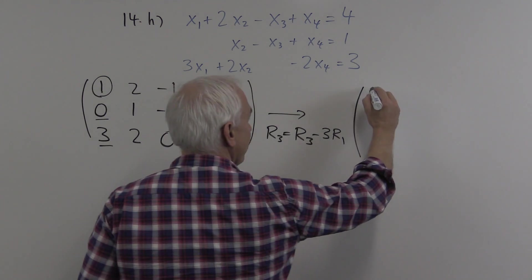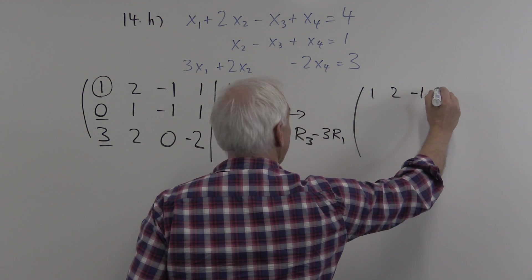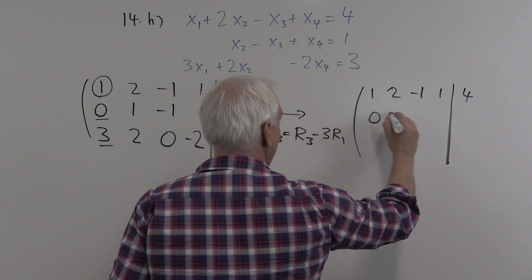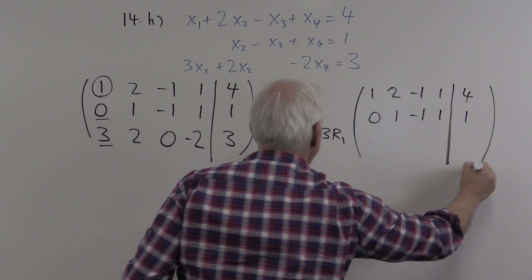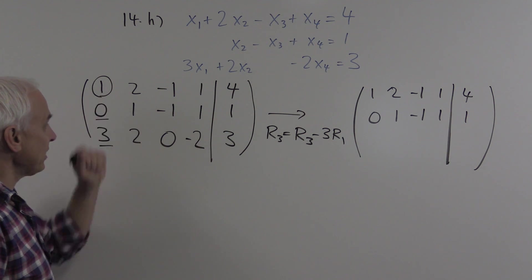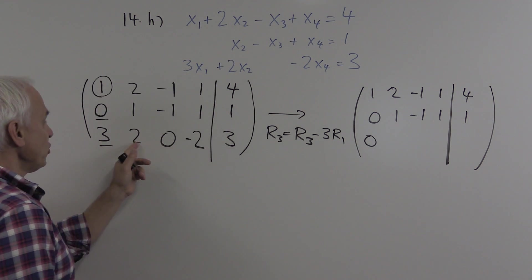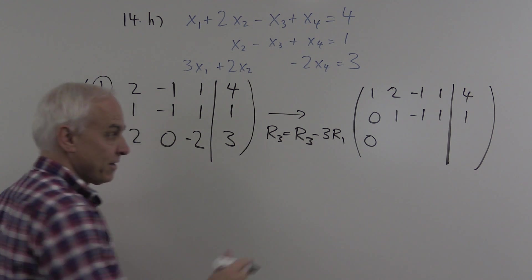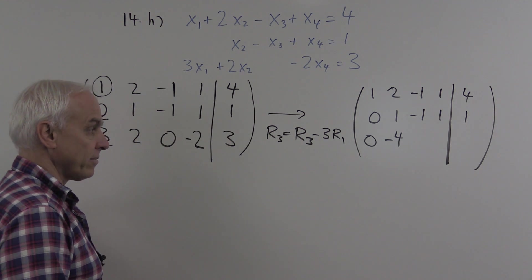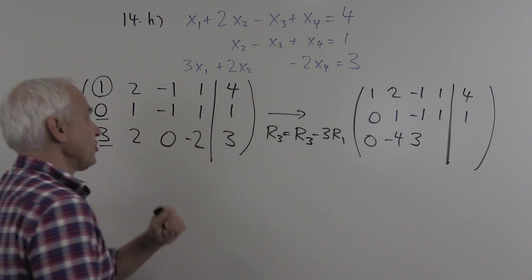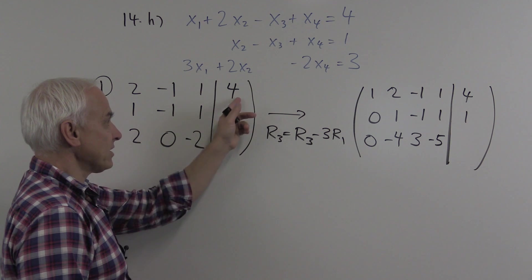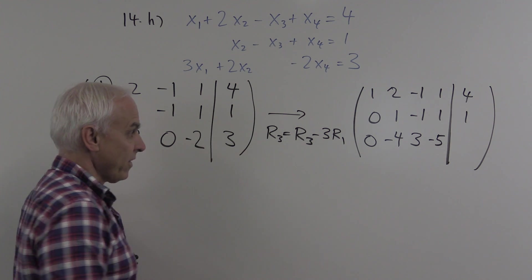The first row is unchanged: 1, 2, minus 1, 1, and 4. The second row will be the same: 0, 1, minus 1, 1, and 1. Now we take this third row and subtract 3 times the first row. So 3 minus 3 times 1 is 0, which is what we want. 2 minus 3 times 2, that's 2 minus 6, which is minus 4. 0 minus 3 times minus 1 is plus 3. And minus 2 minus 3 times 1 is minus 5. On the right-hand side, 3 minus 3 times 4, that's 3 minus 12, for a total of minus 9.